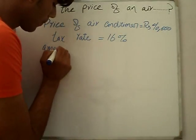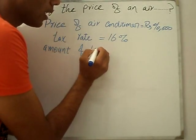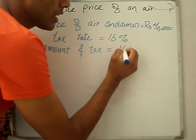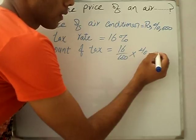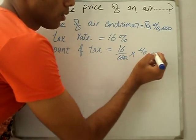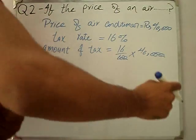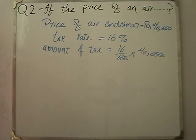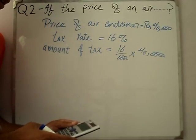Amount of tax: 16% of 40,000. To answer, 40,000 multiply by 16, or 400 multiply by 16.